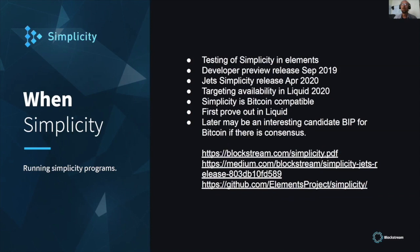What's the timeline? Today we are testing Simplicity in Elements. We made a developer preview release in Elements last September, and the Jets release of Simplicity last month. We're targeting availability in Liquid later this year. Simplicity is Bitcoin compatible — it's very compatible with the UTXO model. It was designed with Bitcoin in mind, actually before the concept of sidechains was thought of, before Blockstream was thought of — back in 2012 in some IRC discussions. One interesting way to bring the technology forward is to prove it out in Liquid, giving people the ability to try things live in a sidechain of Bitcoin and get understanding and learning from that.